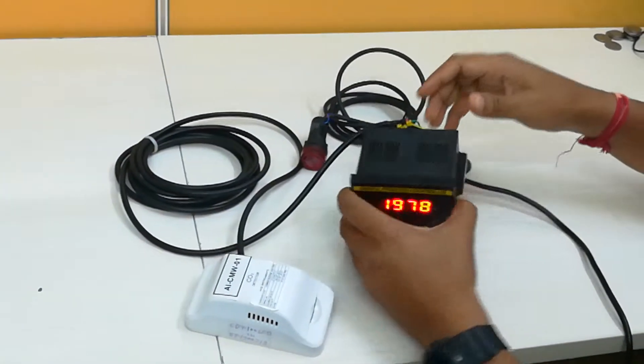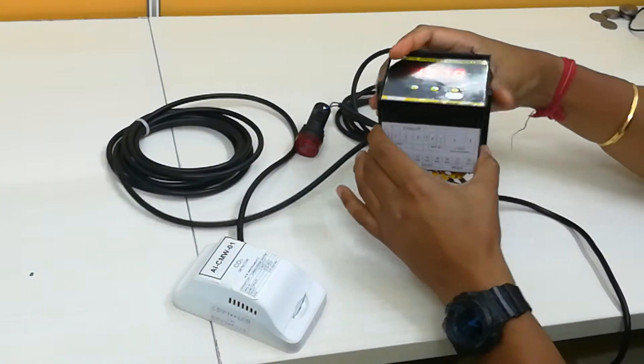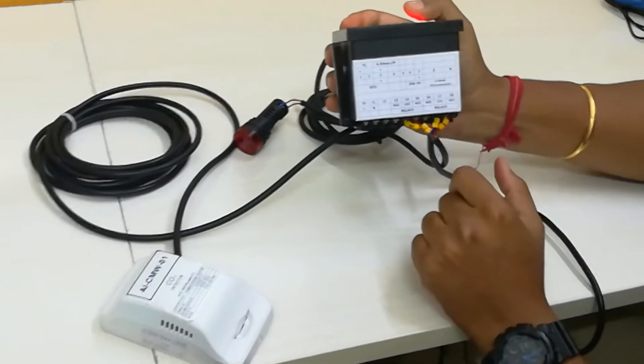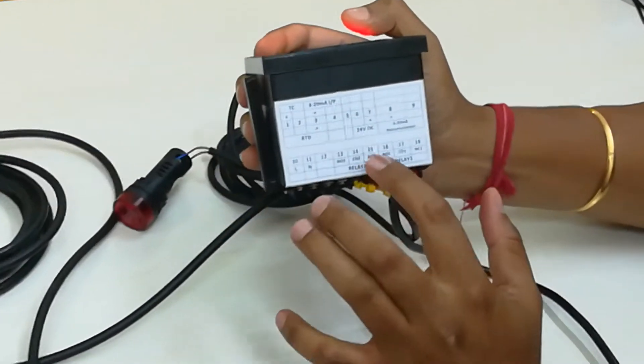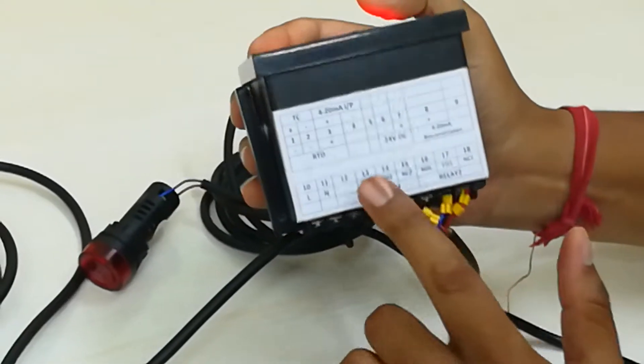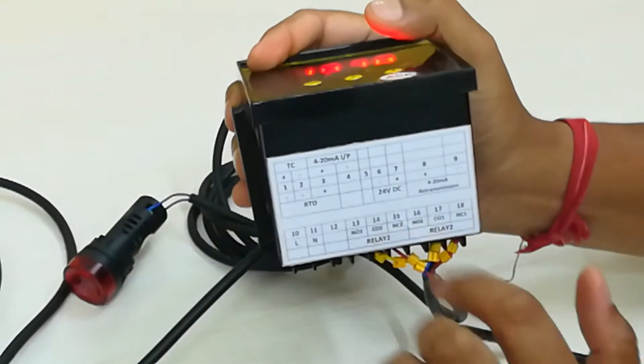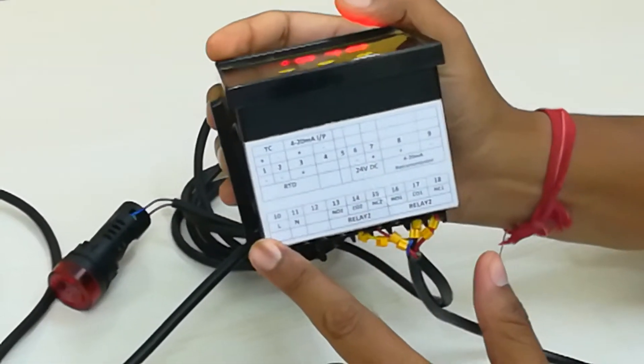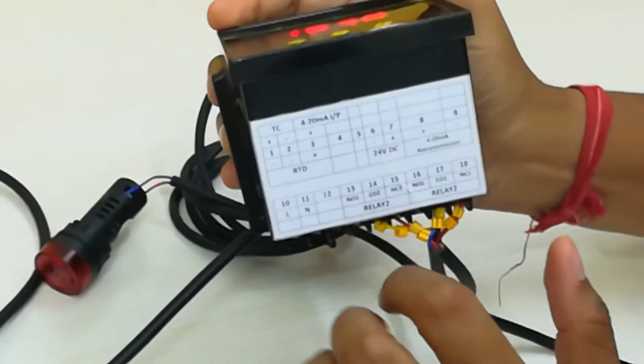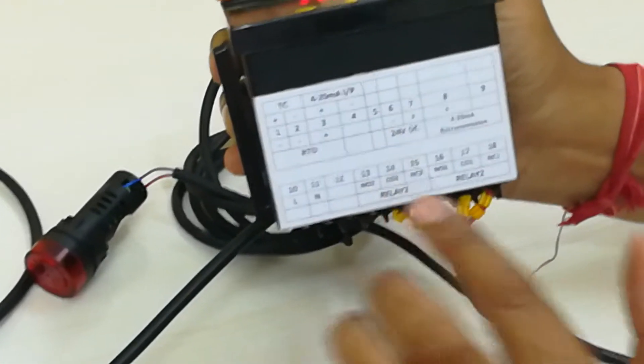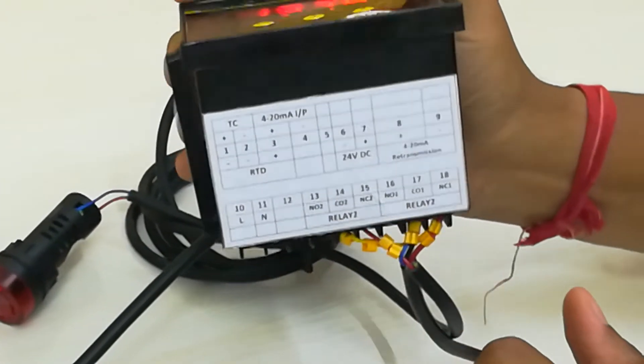This has got the power supply basically mentioned on the bottom of this controller. You can see 4 to 20 inputs, relay 1, relay 2. So you can have two relays basically, one for low, one for high.